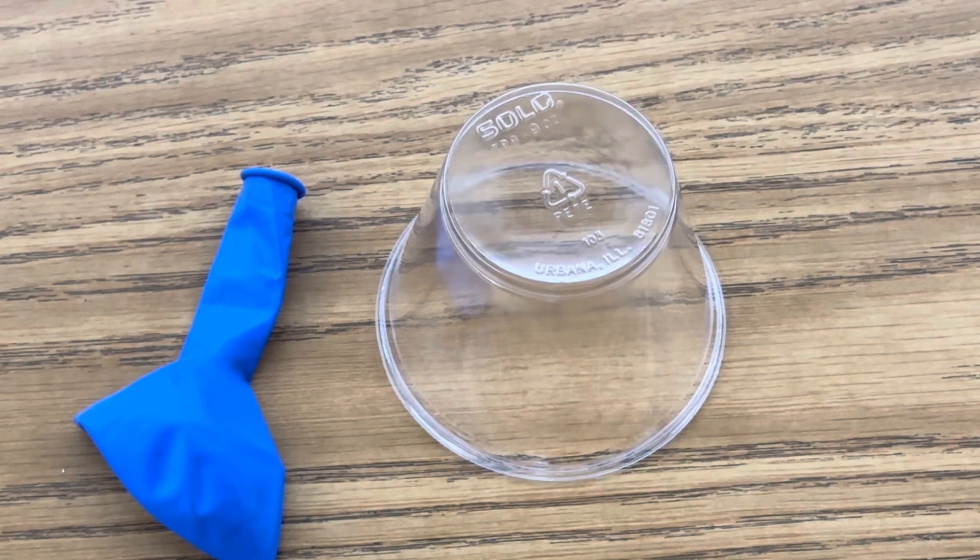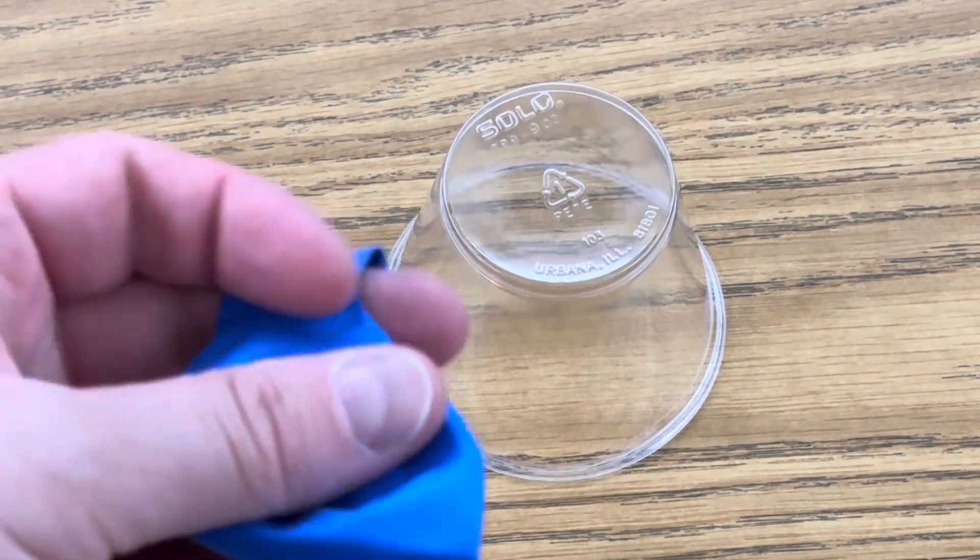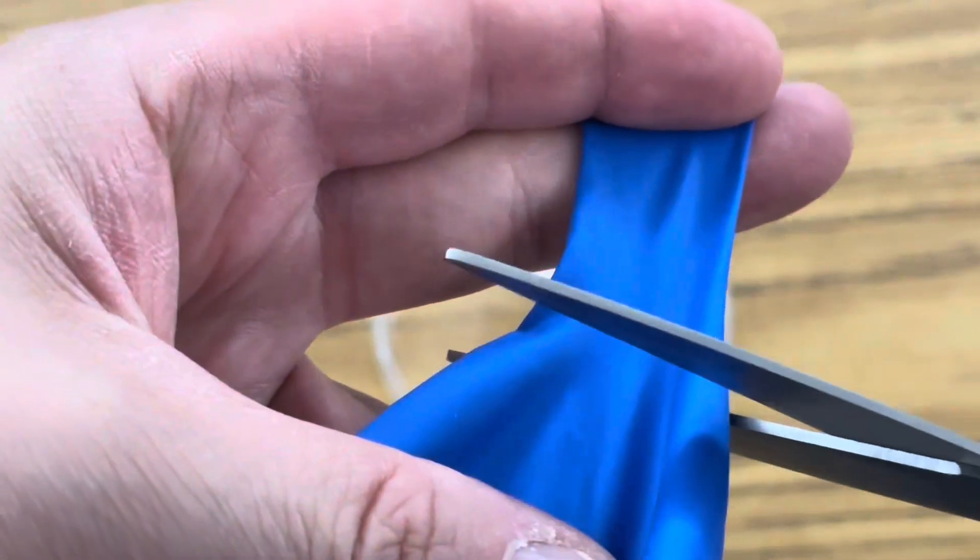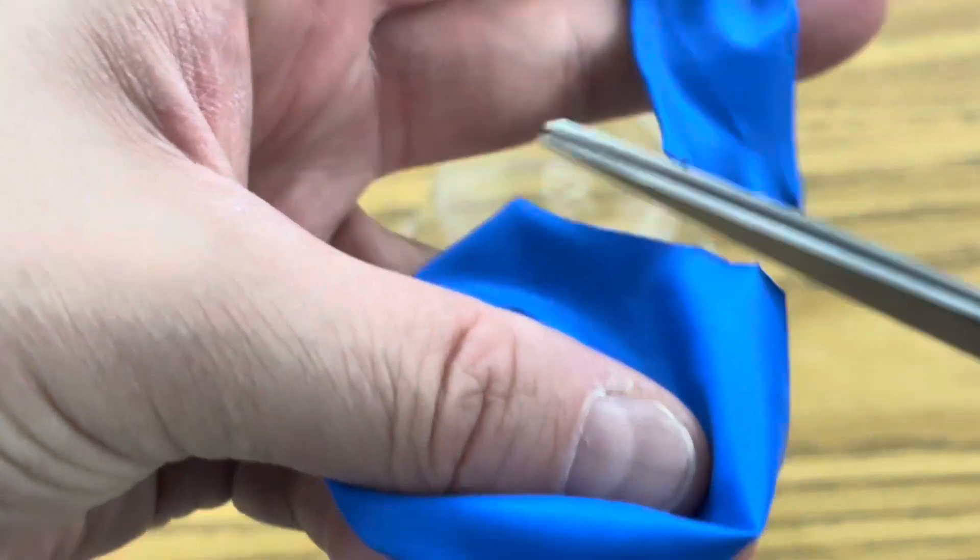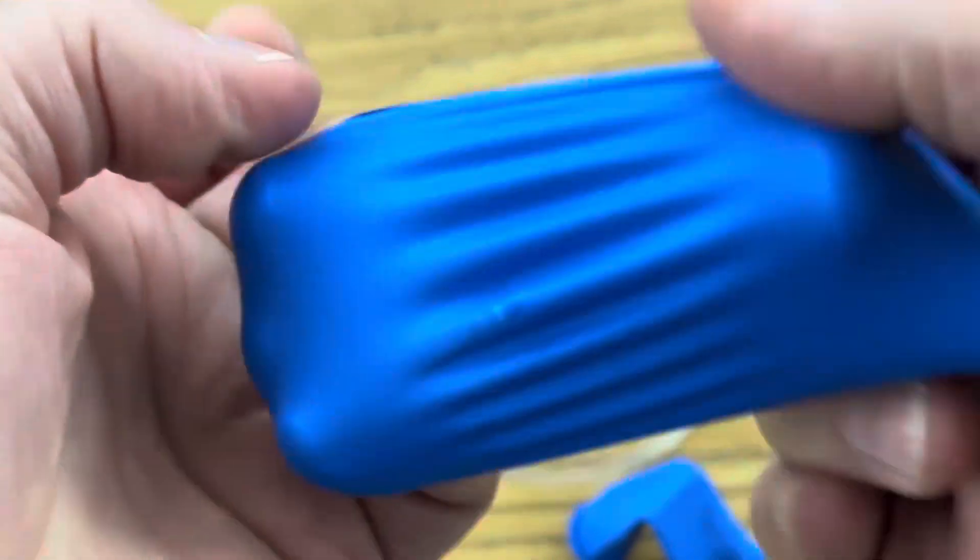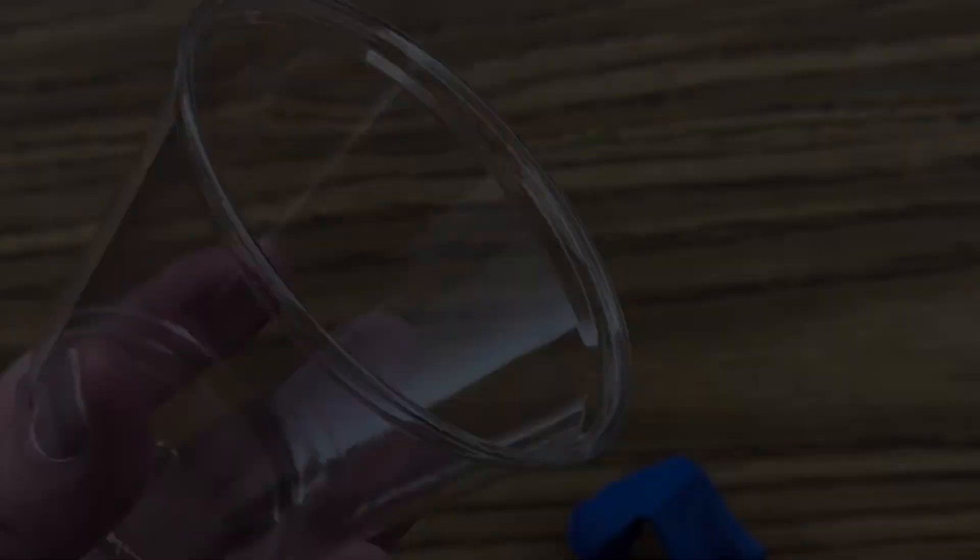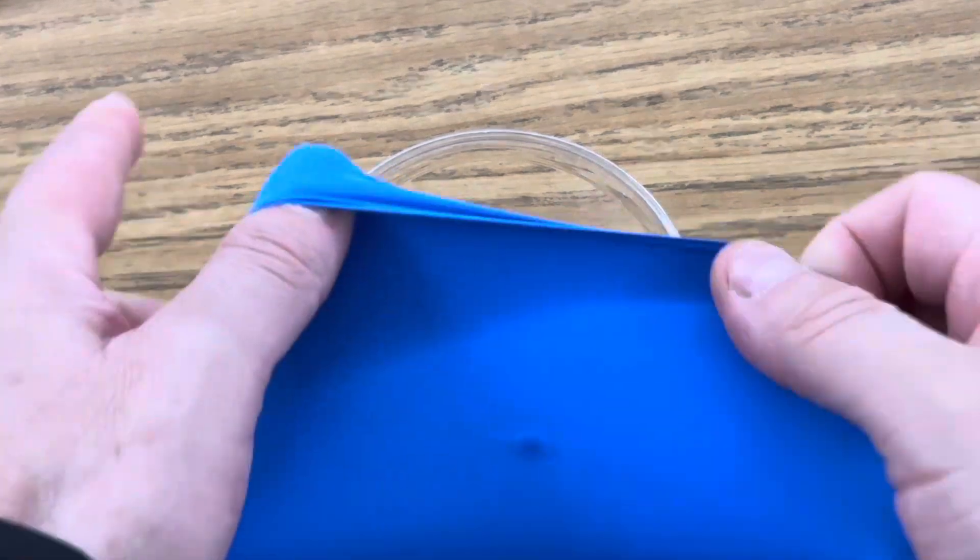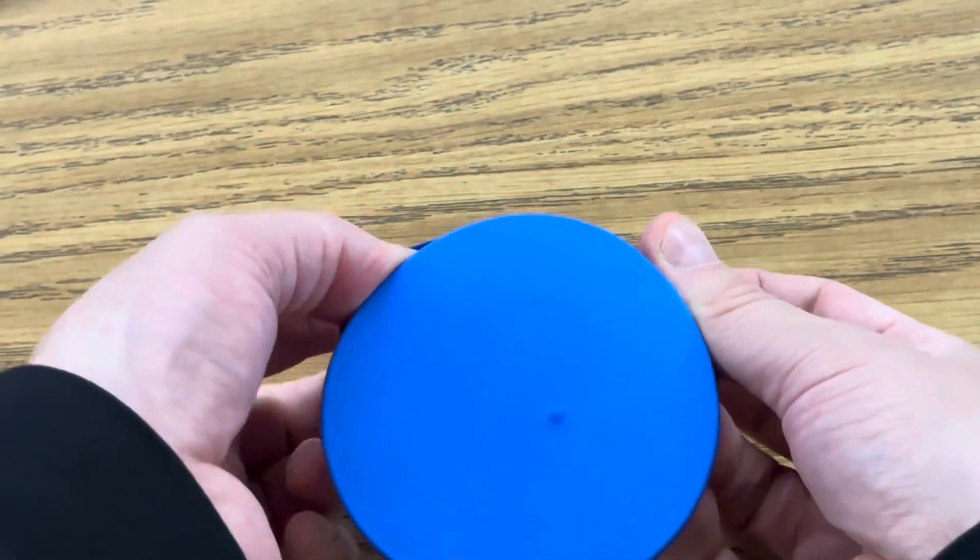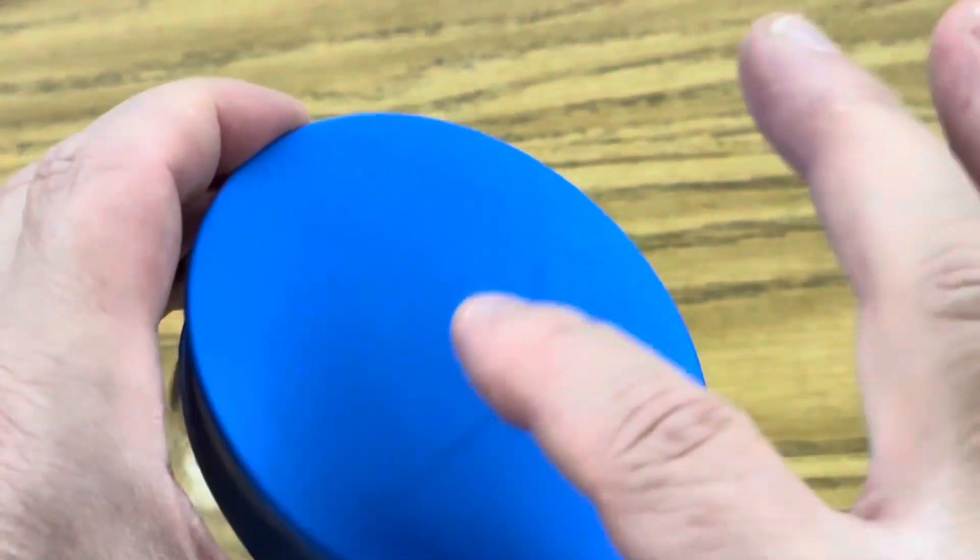The first step is to make a diaphragm for your cup by cutting a balloon pretty close to the neck of the balloon, about here, and then you're going to stretch this over the mouth of your cup so it's a tight diaphragm that covers the opening. So it should look like this.